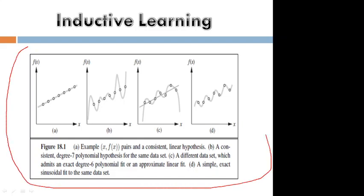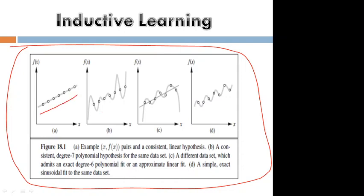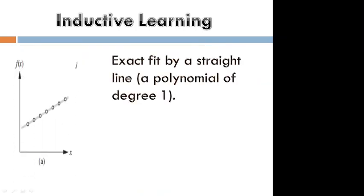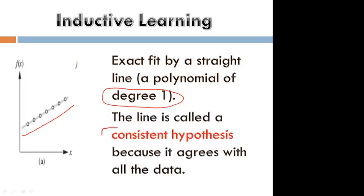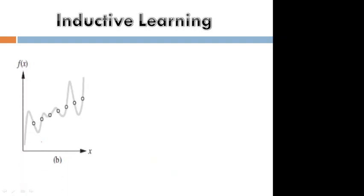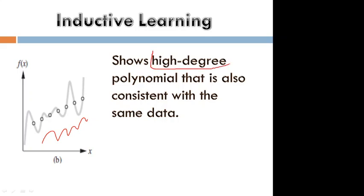Coming to the textbook example, four diagrams are given. In the first diagram there is a straight line — this is degree one, which exactly fits all the data. This is called a consistent hypothesis because it satisfies all the data. In the second diagram it also satisfies all the data but it is not degree one — it is a higher degree because it is not a straight line.